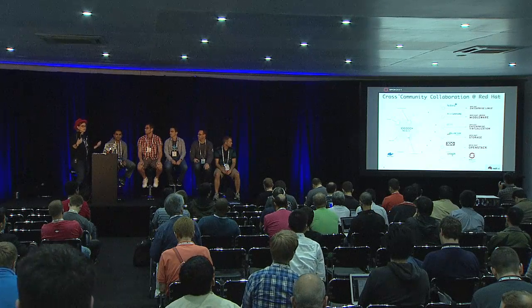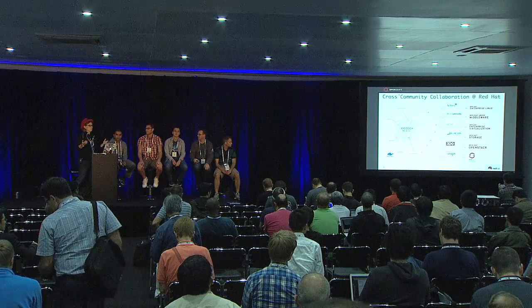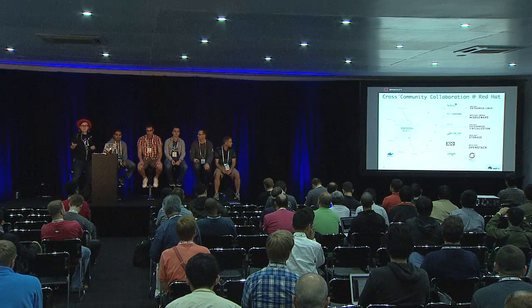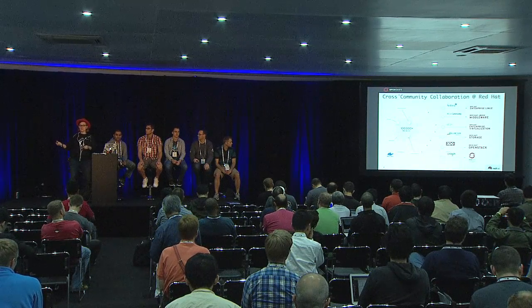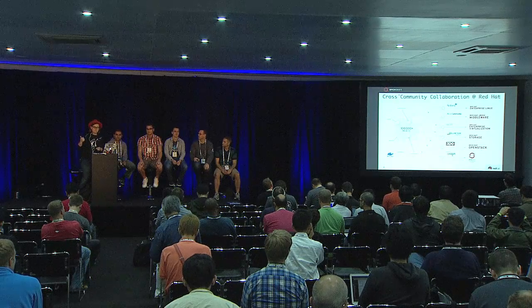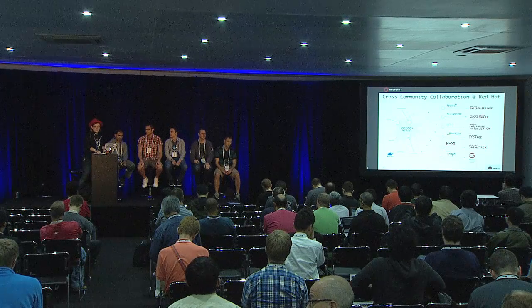What this presentation is really all about is cross-community collaboration. You've seen a lot of different projects come out of OpenStack. We've got people at Red Hat working on all sorts of different parts and pieces of OpenStack, and there are over 100,000 projects that someone at Red Hat works on. We've really been working very hard to collaborate across all of those communities within Red Hat and outside of that.